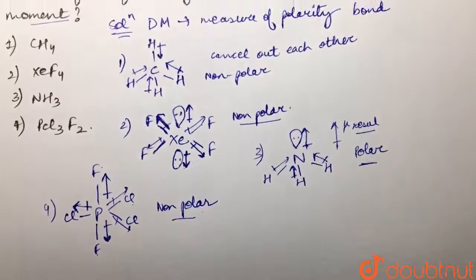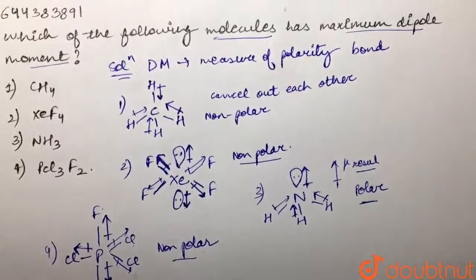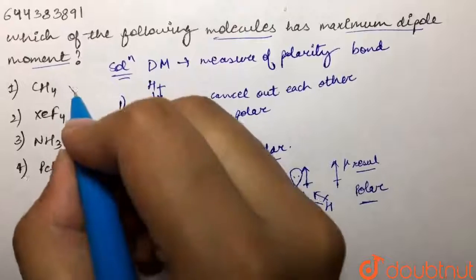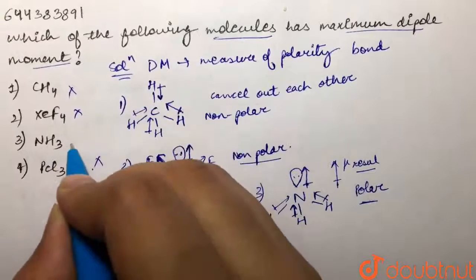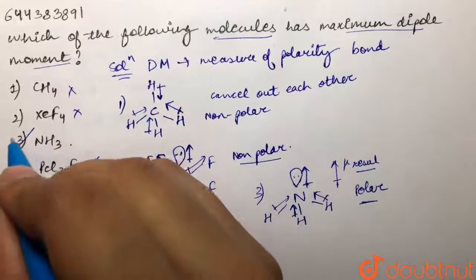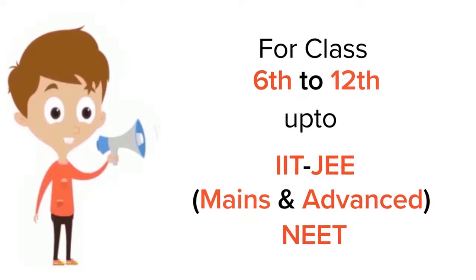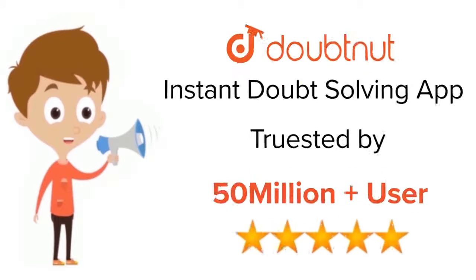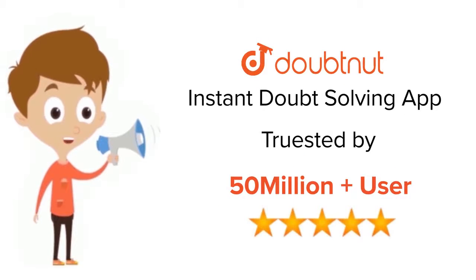The only polar molecule among the four options is ammonia. Therefore, the molecule with the maximum dipole moment is ammonia — not methane, not XeF4, and not PCl3F2. Our answer is the third option, ammonia.